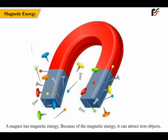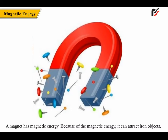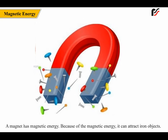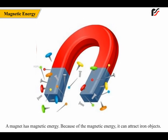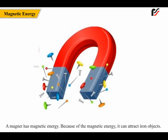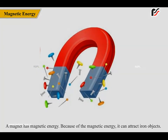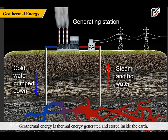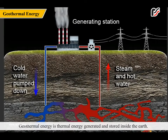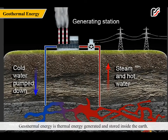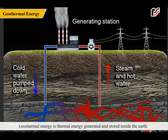A magnet has magnetic energy. Because of magnetic energy, it can attract iron and other objects. Geothermal energy is thermal energy generated and stored inside the Earth.